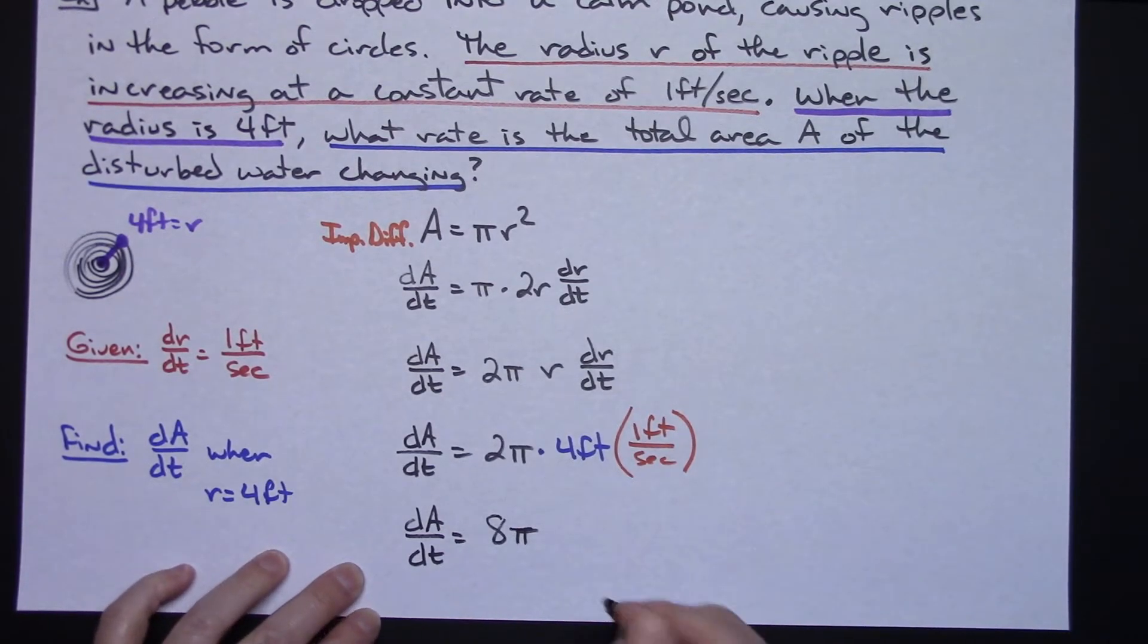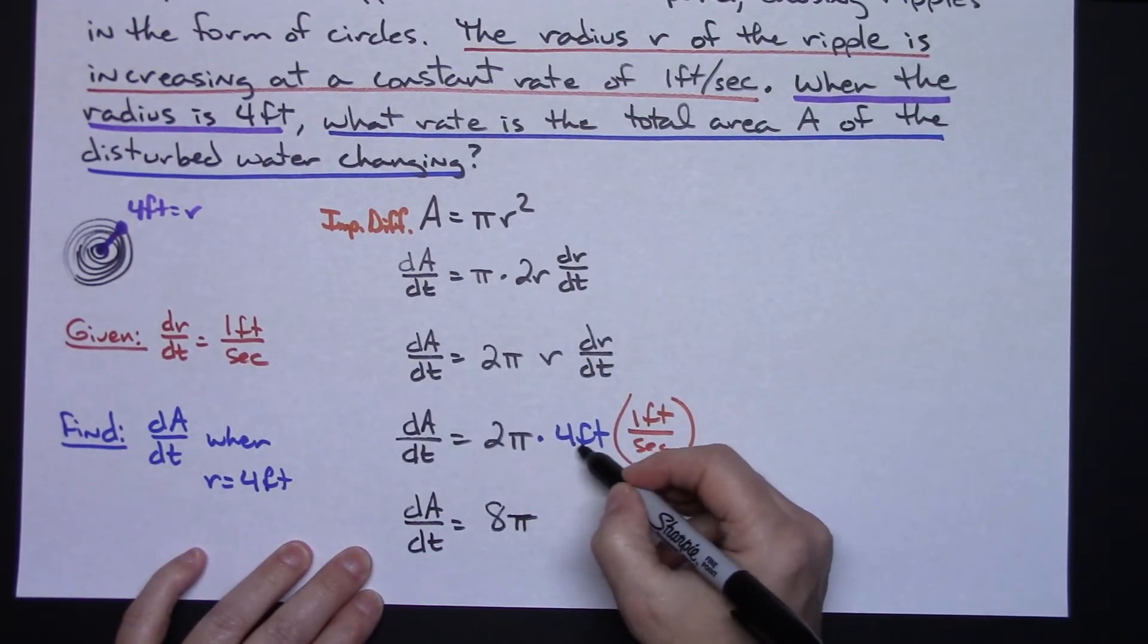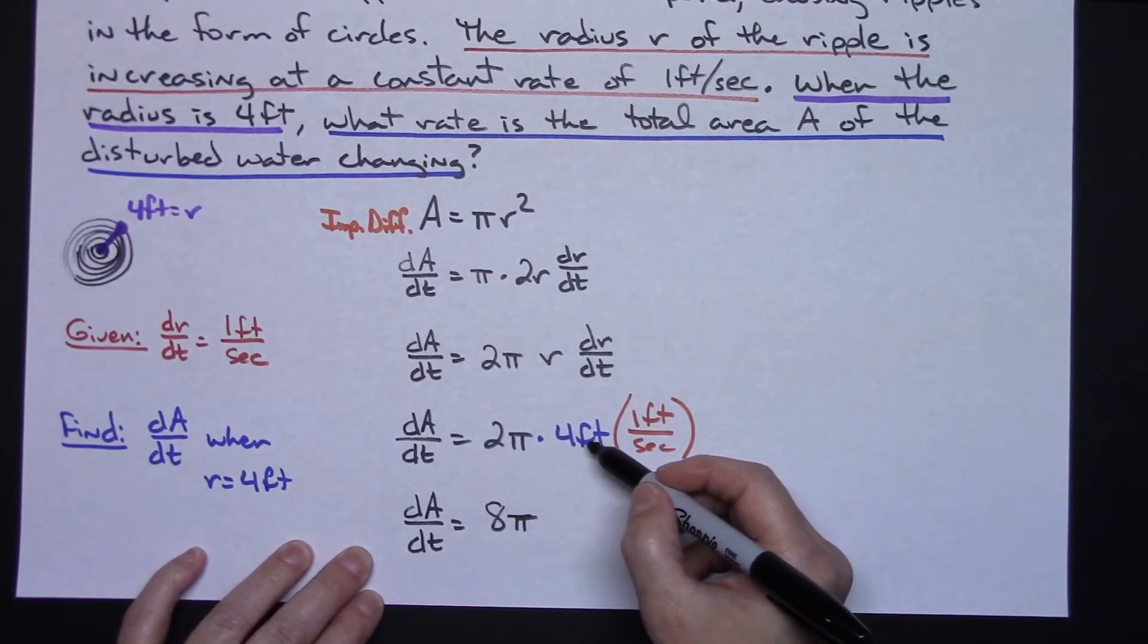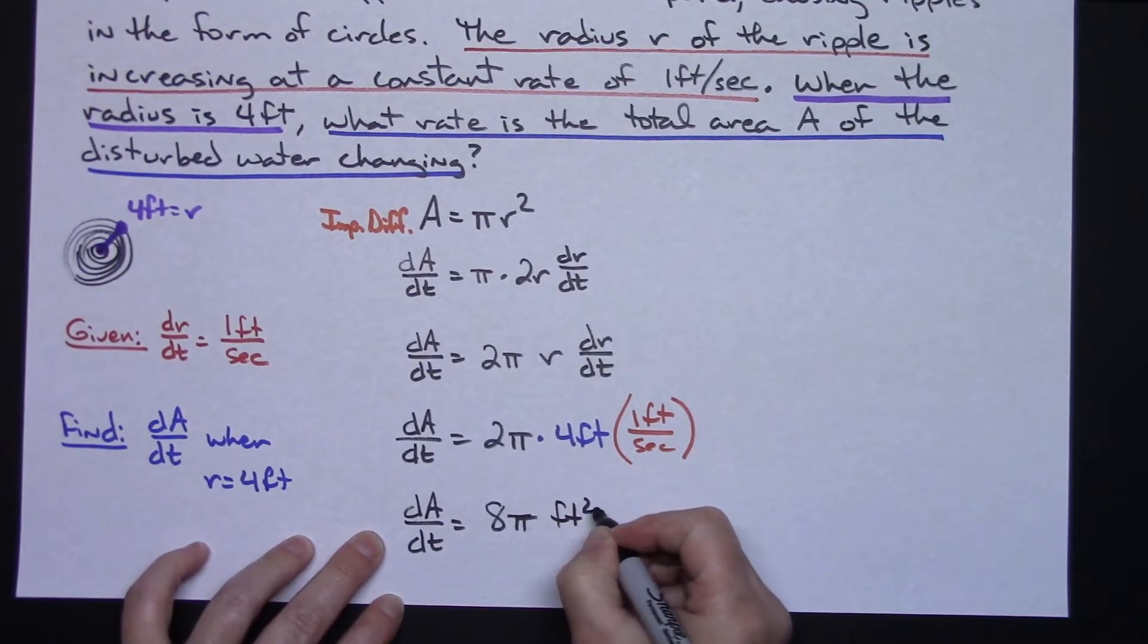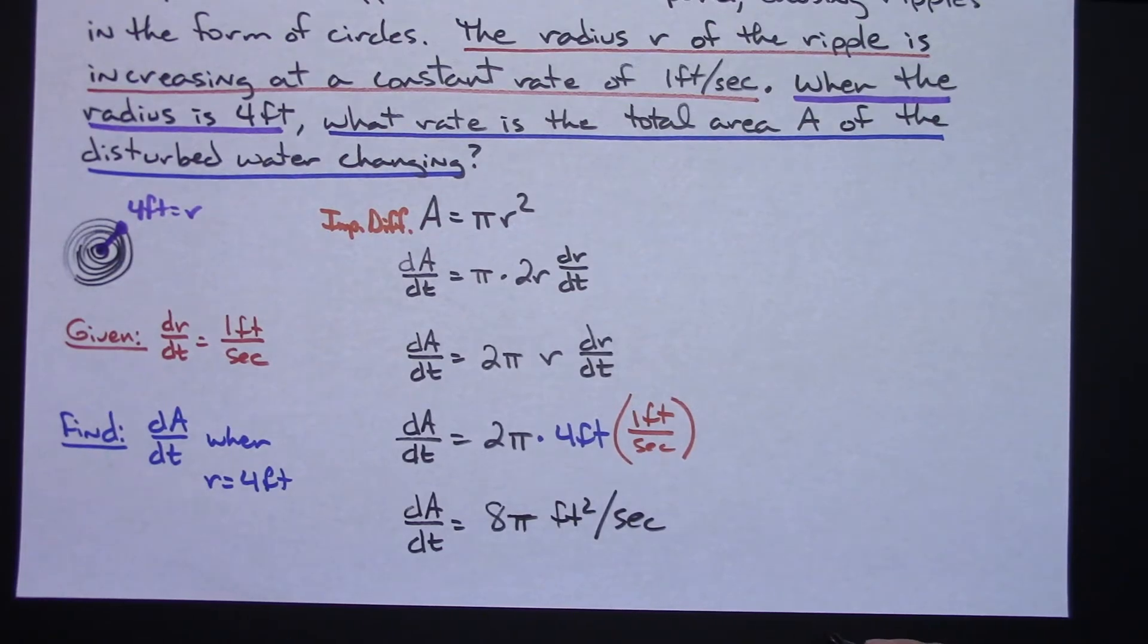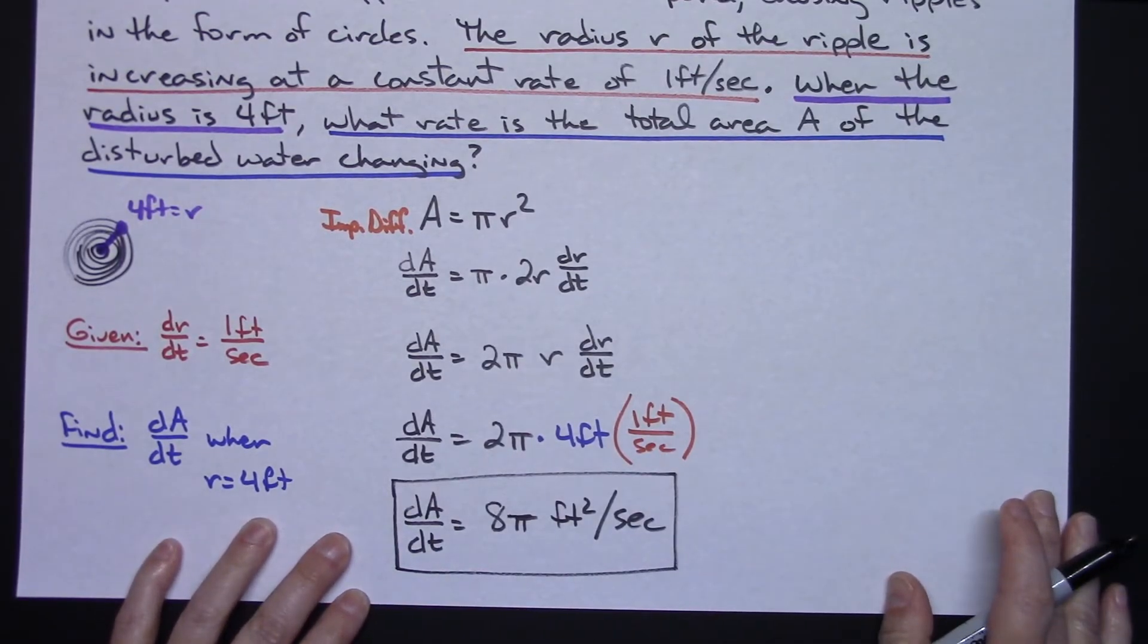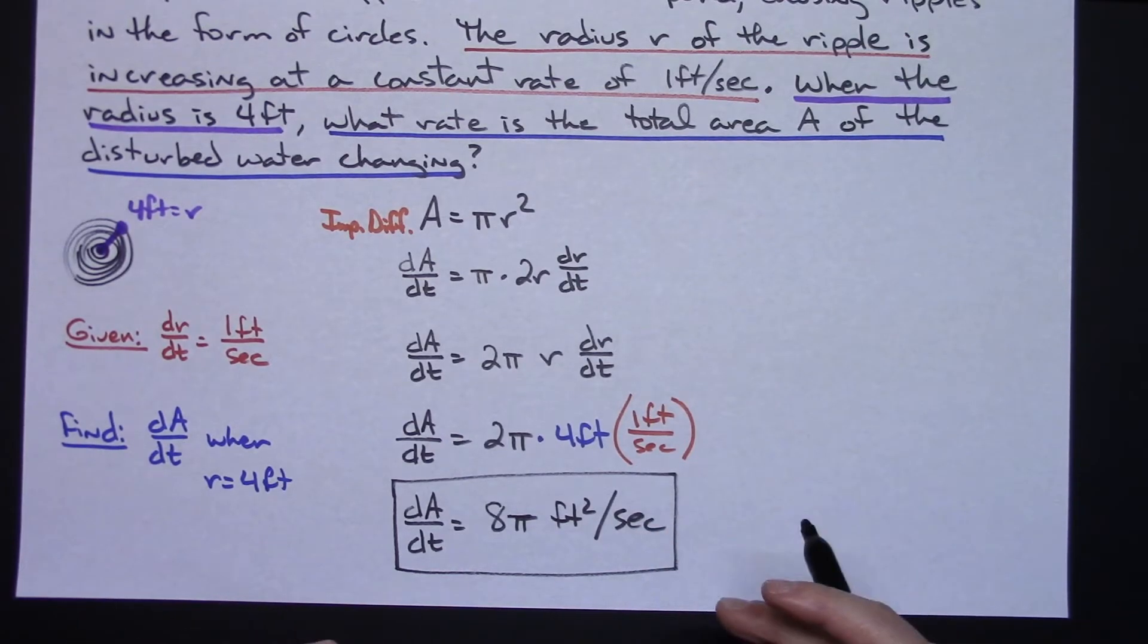So dA/dt is equal to 8 pi. Now it is a rate, it is the area changing. Look at what you've got, you need to put labels in when you do this because this will tell you then what your label is going to be. I have a feet and a feet right here so that would be feet squared per second because that one's per second right there. So pretty much a straightforward related rates problem, nice little simple equation, kind of short.